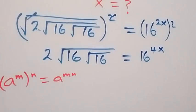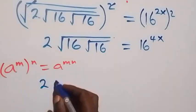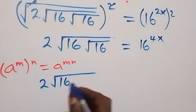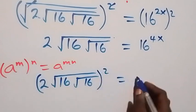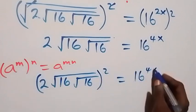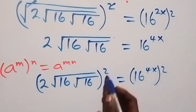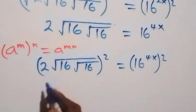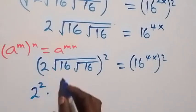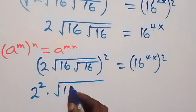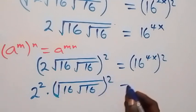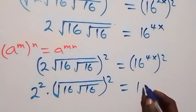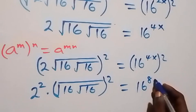In the next step we square both sides again. What we have here becomes: multiply by root 16, then root 16, all squared, equals 16 raised to power 4x, also all squared. Applying the power law, we affect the 2 here, so we have 2 squared, then we affect square root of 16 times root 16 here, which equals 16 raised to power 8x.